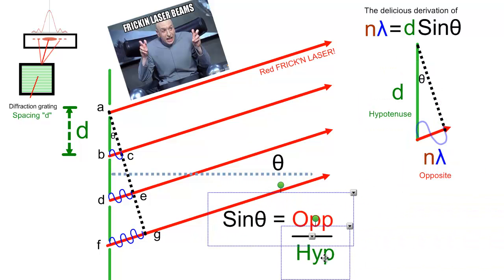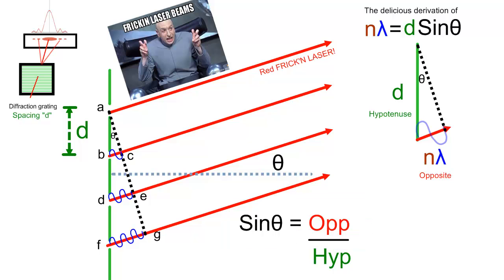The rule goes sine equals opposite over hypotenuse, or as they say, summer on holidays. There's the angle sine, so it's the opposite, the opposite of the angle. You can call that a different name. Can we? Because this opposite here is n lambda, and the hypotenuse is the distance in the diffraction grating, it's d.